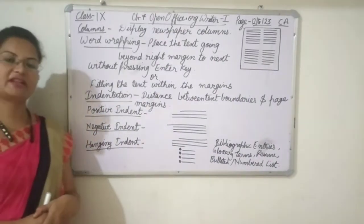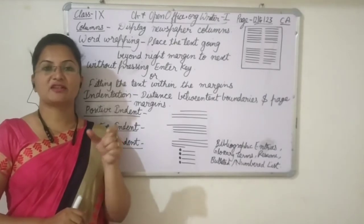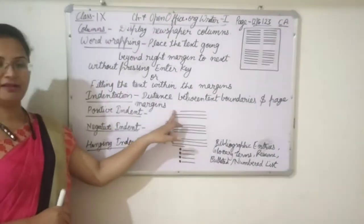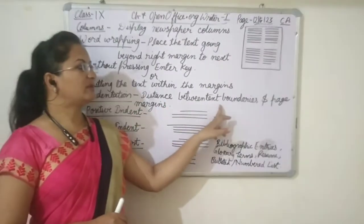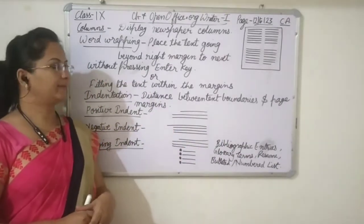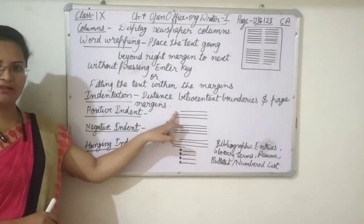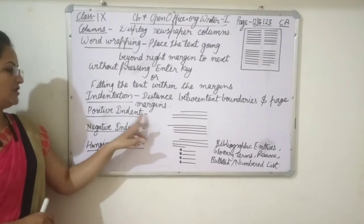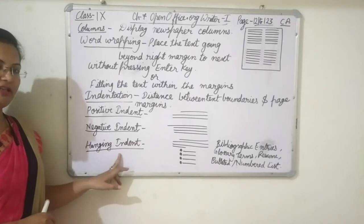Now, indentation. You might have seen that while writing a paragraph, you always put some space before the first line of the paragraph — that is indentation. It means the distance between the text boundary and the paper margin. We can increase and decrease the space before a line, and that is known as indentation. There are three types of indentations: positive indent, negative indent, and hanging indent.